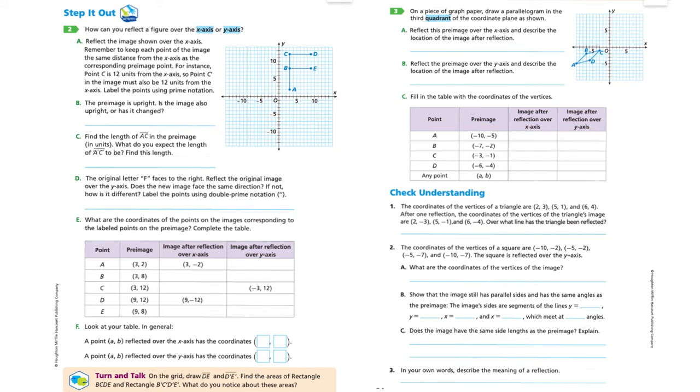Pause the video and do that. Then you'll be able to answer the rest of the questions or most of them. The pre-image is upright, looks like the letter F. What they're asking now is, is this image that you've created from the pre-image reflection also upright or has it changed? And then in C, they ask you to find the length of AC in the pre-image and also find the length of A prime C prime. They want to know, what do you think will happen? Then find the length and see if you are correct. Pause the video and do those.